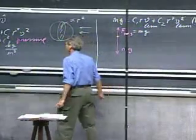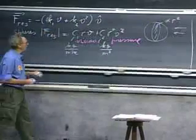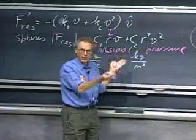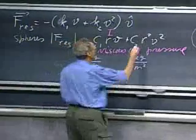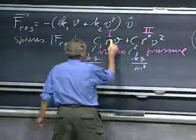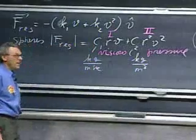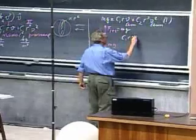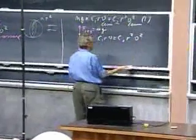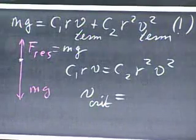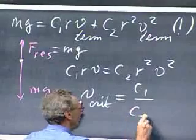Very often we work in a domain where the viscous term dominates — I call that regime one. But it also happens that the pressure term dominates — that's regime two. Where the viscous force and pressure force are equal, we set c1·r·v = c2·r²·v², and that velocity we call the critical velocity. It's simply the speed at which the two terms are equal, and it equals c1 divided by c2 divided by r.